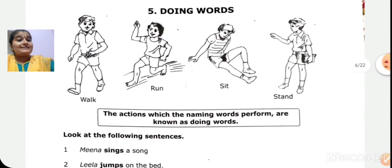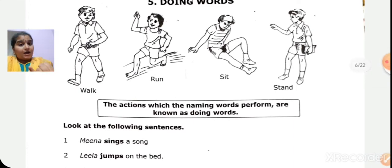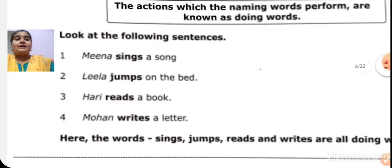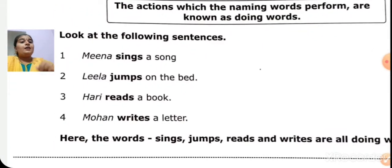Can we see some example? Walk. Run. Sit. Stand. These are the doing words. Now, let us see some examples. Meena sings. Meena sings a song. So, sings. The word sings is a doing word.